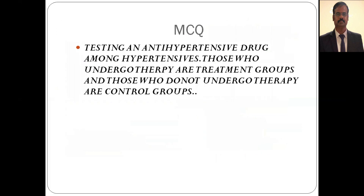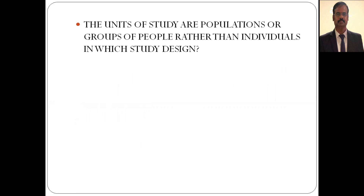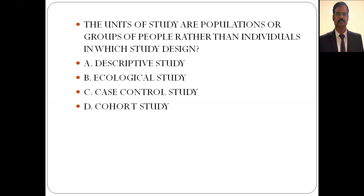MCQ example 1: Testing an anti-hypertensive drug among hypertensives — those who undergo therapy are treatment groups, those who do not are control groups. This study design is: clinical trial, field trial, cohort study, or ecological study? Since the investigator is giving a treatment among patients attending tertiary care centers, the answer is clinical trial. MCQ example 2: The unit of study is a population or group of people rather than individuals — which study design? The answer is ecological study.